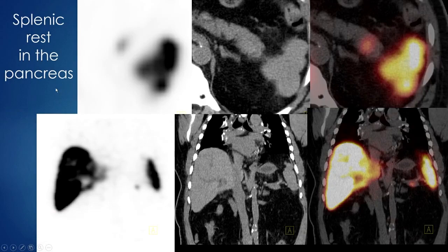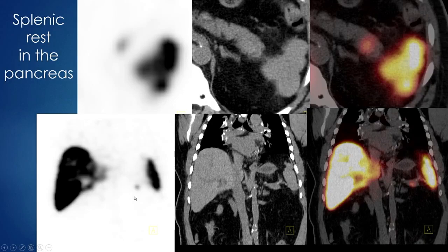A probably more common indication is splenic rest in the pancreas — again, only when conventional imaging is inconclusive. Focal activity at the tip of the spleen corresponding to a lesion seen on conventional imaging has an exceedingly high positive predictive value for splenic tissue. Pancreatic tumors don't have reticuloendothelial system, so you can exclude those. This was a busy whirlwind and there were many other topics not covered.